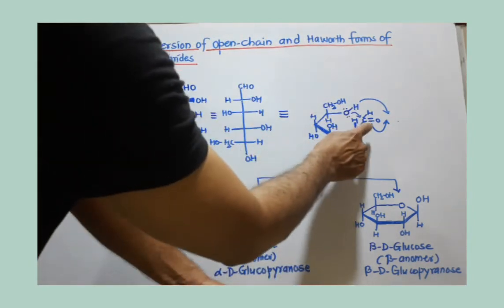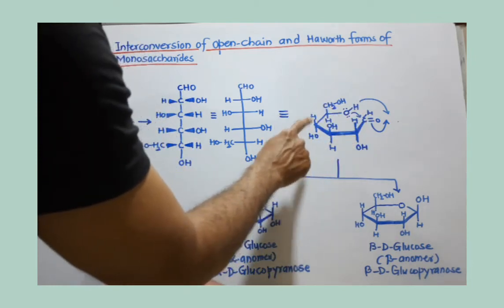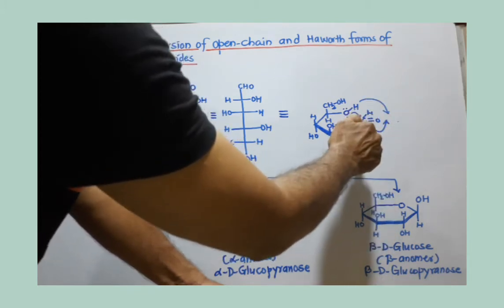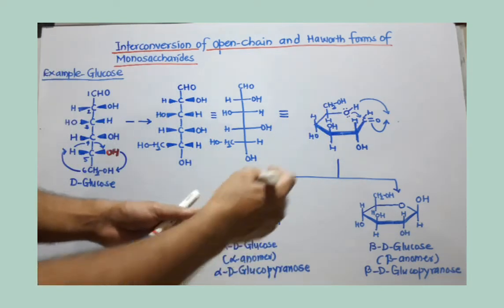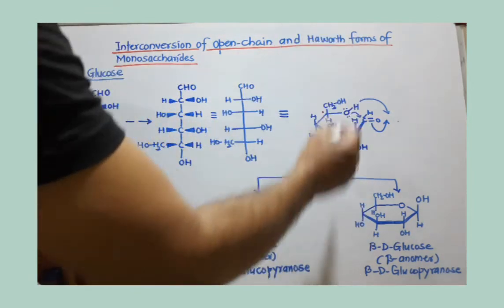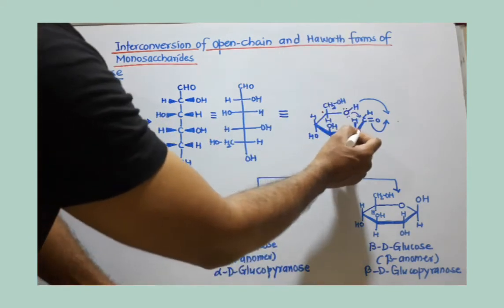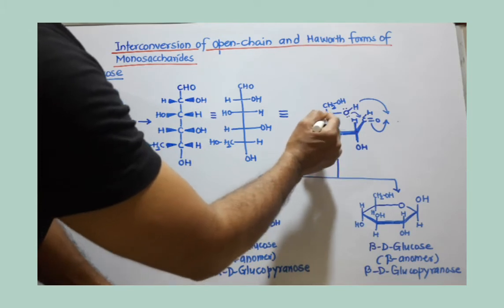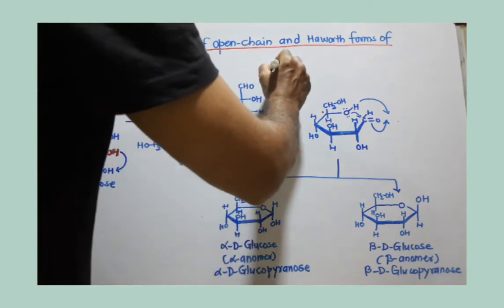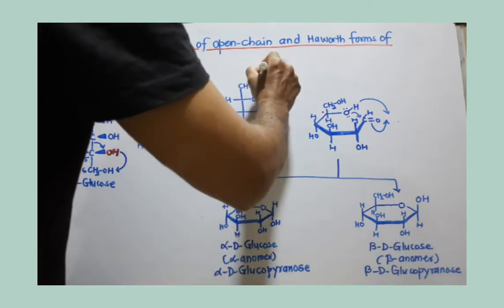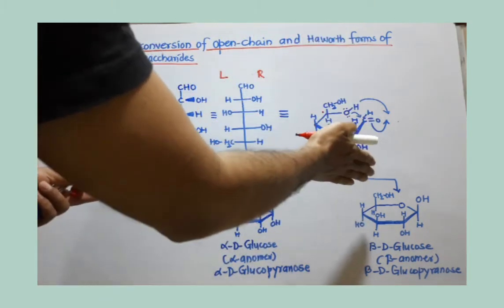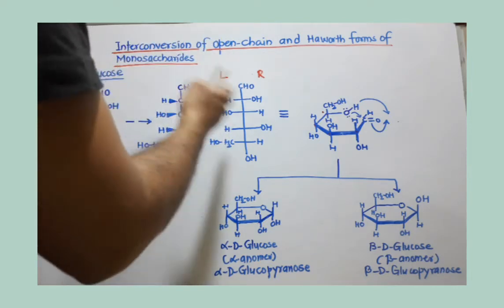If you bring the CHO here, don't attach all groups at the beginning — just draw this kind of structure: CHO here, bend this here, then here, then here, and here. This is your fifth carbon. Now draw vertical lines at each corner — here, here, here, and here. Those groups lying toward the right-hand side will go down, and whatever groups are toward the left-hand side will go up. Just a very simple consideration.